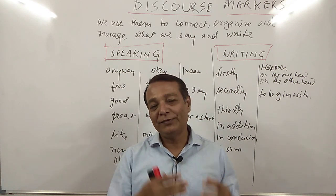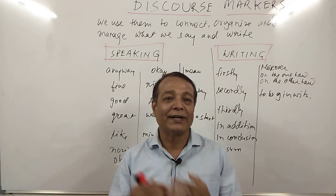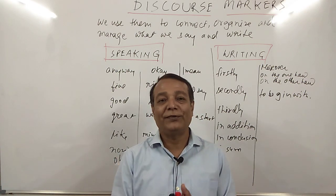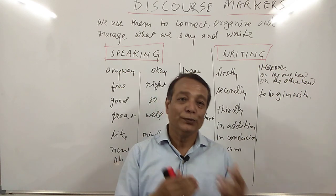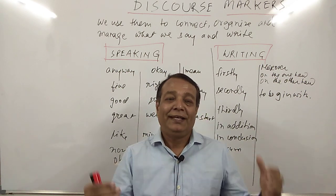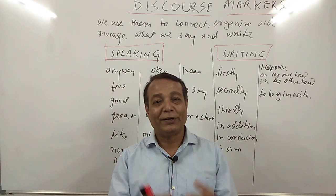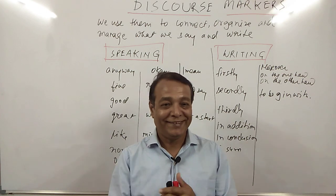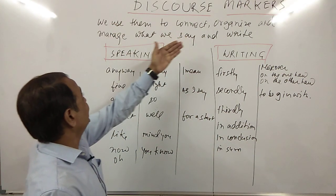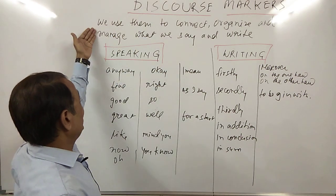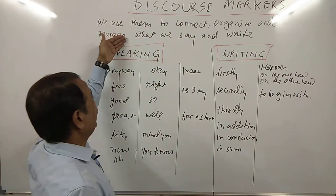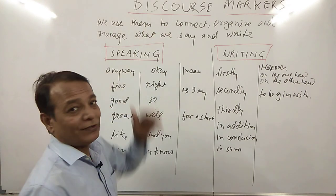When we talk to someone or when we write something, there are certain words and phrases that we use to maintain connectivity and manage the word order and organize things. So in short, discourse markers — we use them to connect, organize and manage what we say and what we write.